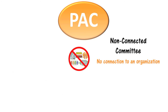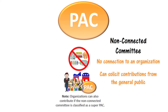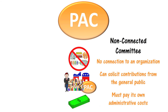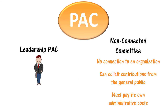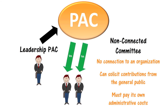The second type of PAC is a non-connected committee. This type of PAC can solicit contributions from the general public, which includes individuals, candidate committees, party committees, and PACs. A non-connected committee must pay its own administrative costs. A specific type of non-connected committee is a leadership PAC, which is sponsored by a politician so that he or she can help other candidates.